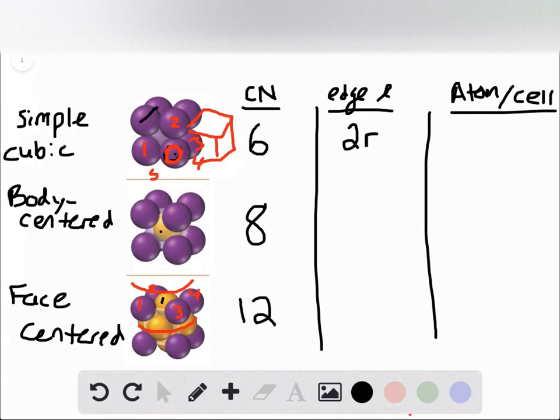So through some algebra that I'm not going to get into here, the edge lengths of the other two types of cells are 4r over the square root of 3, and 2 times the square root of 2r. And you can get these answers if you go through, and the book has a much better explanation about why those are the cases, but for the purposes of this, we're just going to write out what the answers are.